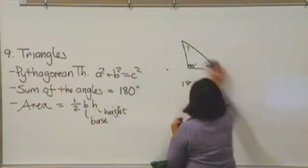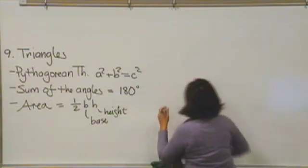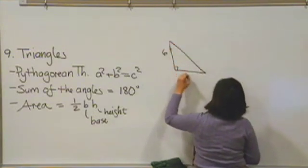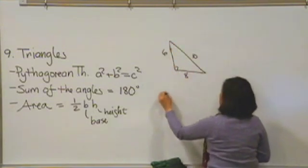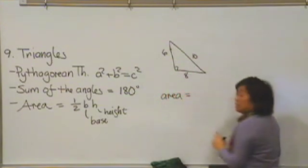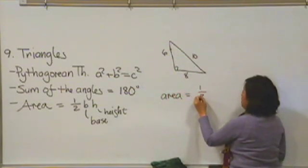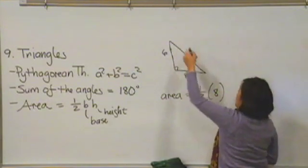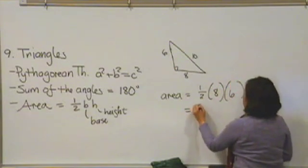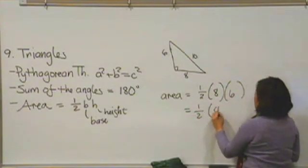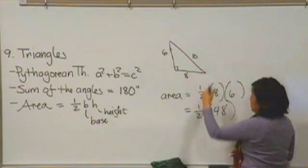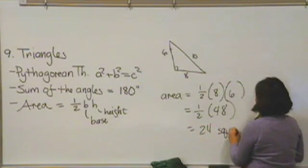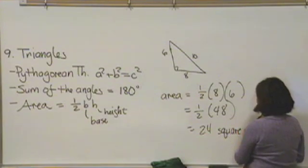So for example, let's go back to our triangle that we had earlier, where we found out that this was 6, this was 8, and this was 10. Let's find the area of this triangle. It's going to be equal to 1 half times the base here, which is 8 times its height, which was 6. In other words, half of 48, that triangle would have an area of 24 square units, whether it's inches or centimeters or whatever it's being measured in.